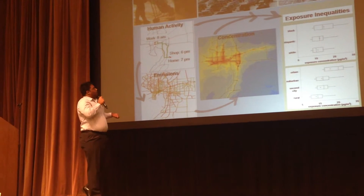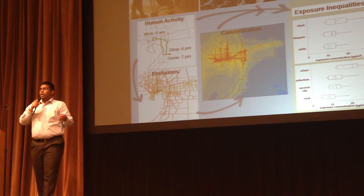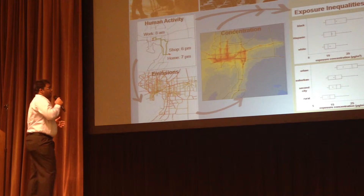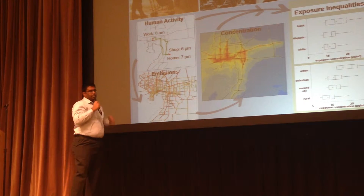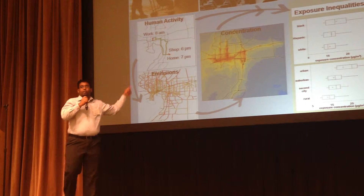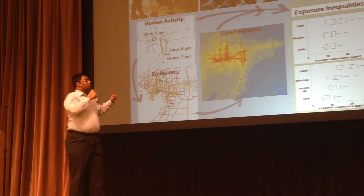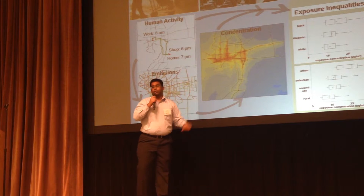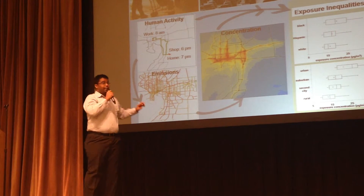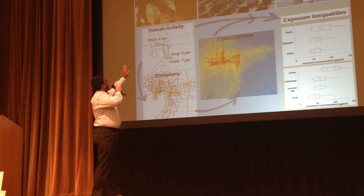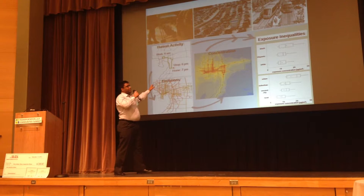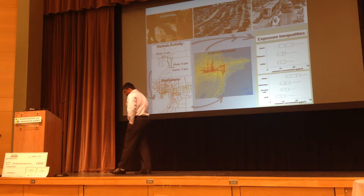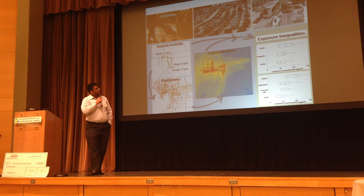First, I use a transportation model to estimate when, where, and how people spend their time, as can be seen here. Since I know where people are, I also know where their vehicles are, so I use that to estimate their emission values. I then input these emission values into an air pollution model to understand how pollution concentrations are distributed in the study region. Finally, I combine the locations of people with the pollution concentrations to estimate their exposure levels.